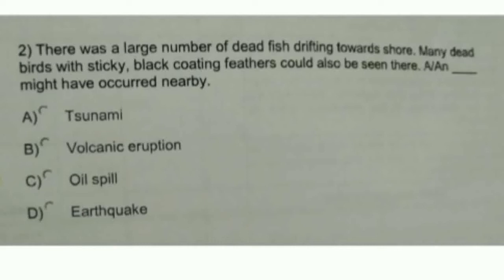Oil spill is the condition when mineral oil or petroleum oil being carried on a ship gets spilled in the sea due to some reason. This causes death of aquatic organisms. Oil gets coated on the feathers of aquatic birds, making them unable to float.